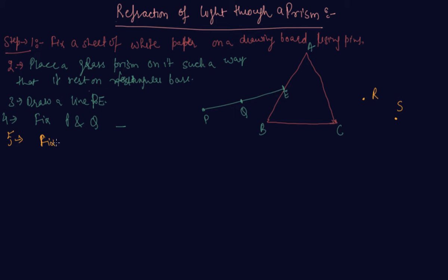Fix the pins such that R and S align with the images of P and Q respectively. Remove the pins and the prism. What you will see is that the line PE meets the boundary of the prism at point E.